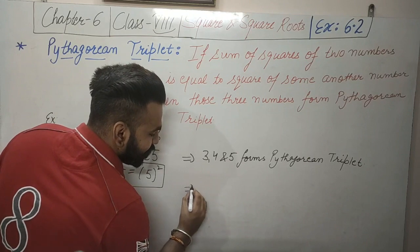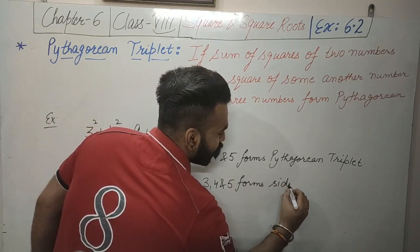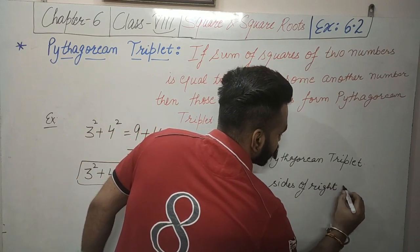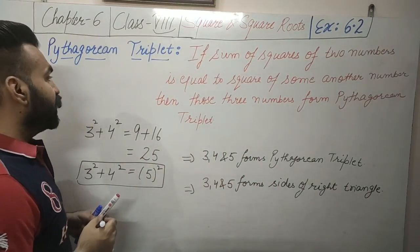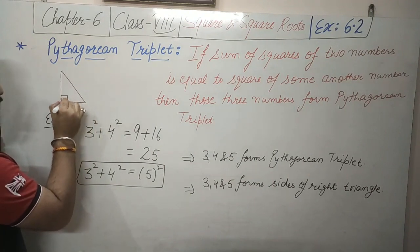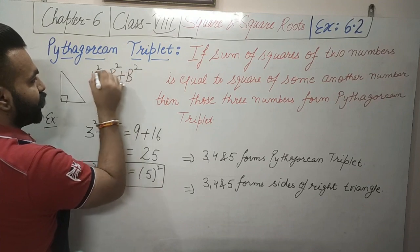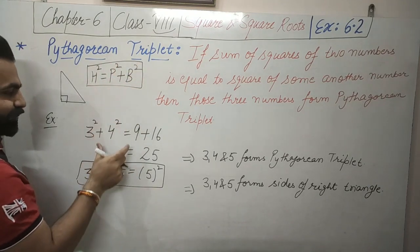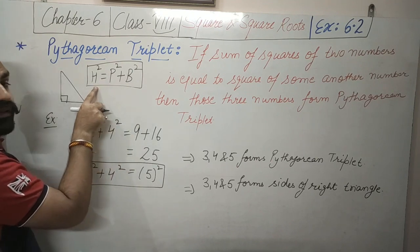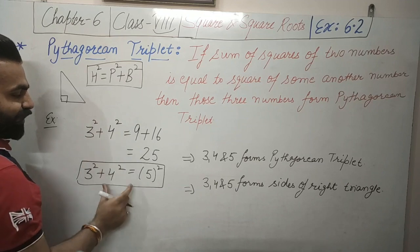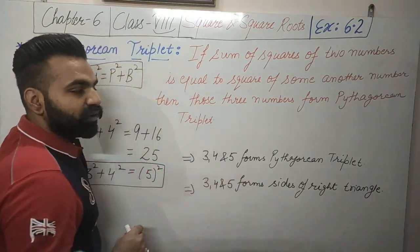We can also say that these three numbers 3, 4, and 5 form the sides of a right triangle. In a right-angle triangle, the hypotenuse squared equals perpendicular squared plus base squared — this is the Pythagoras theorem. So the sum of the squares of two sides equals the square of the third side, which is the same concept.